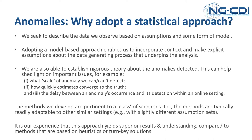What we seek to do is describe the data we observe based on assumptions and some form of model. By adopting a model-based approach, we can incorporate context and make explicit the assumptions about the data-generating process. In framing the problem this way, we're also able to establish rigorous theory about the anomalies detected — relying on the rigour of mathematical proof. This can shed important light on issues such as what scale of anomaly we can and can't detect, and how quickly our estimates of anomaly locations converge to the truth.